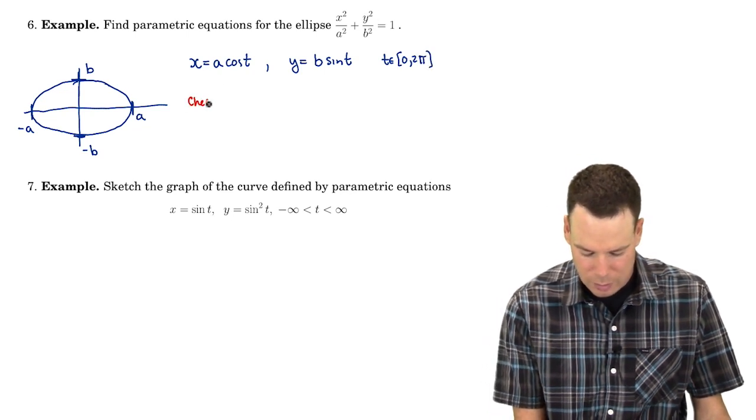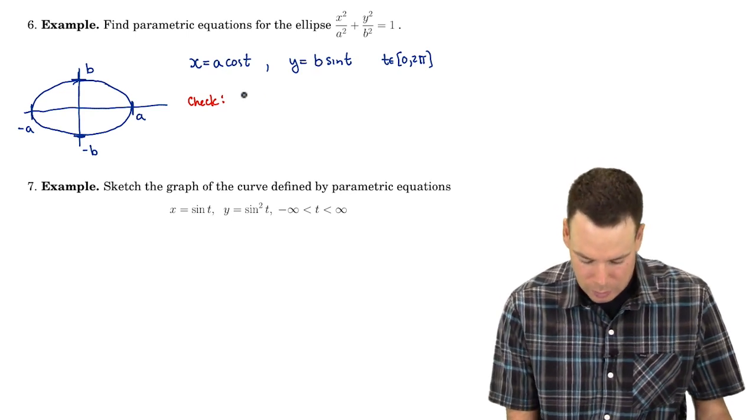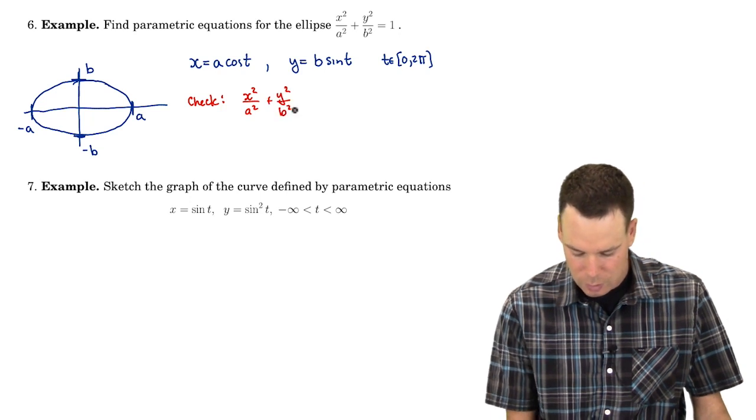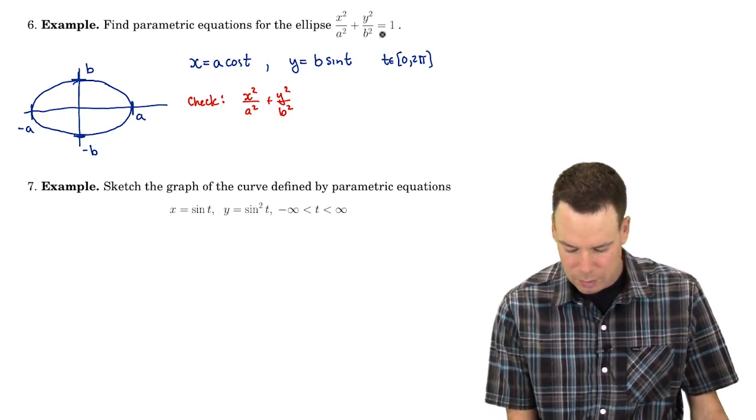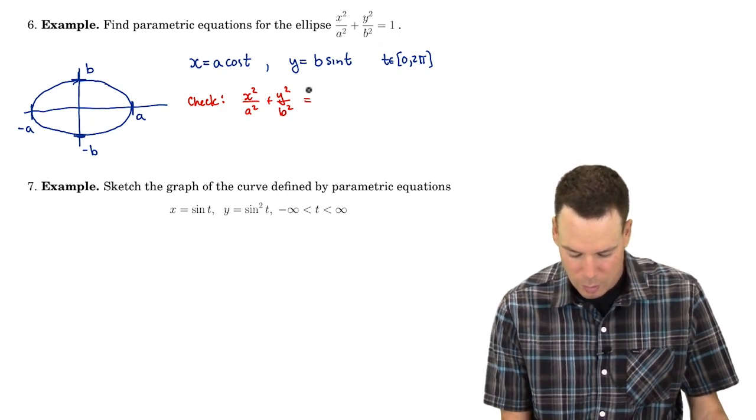Let's perform our check to see if these points actually do live on the ellipse. So we're going to look at x squared over a squared plus y squared over b squared, and we're going to see if that expression is equal to 1 for our choices of these functions. Well what's x squared?